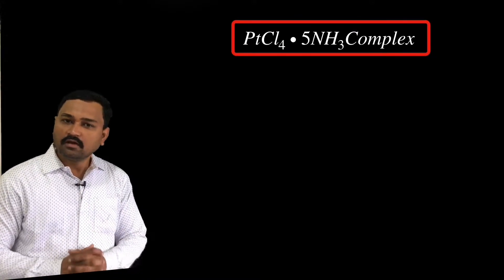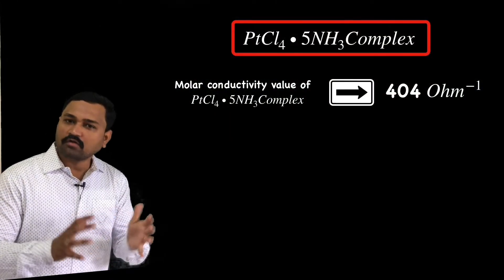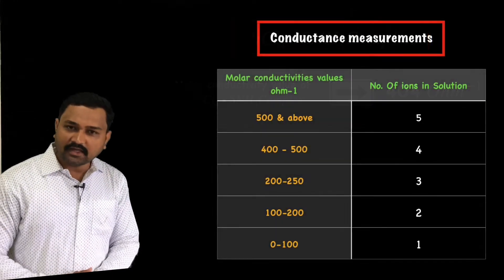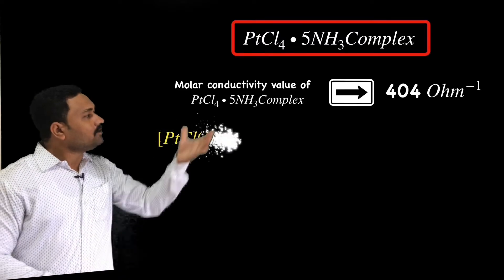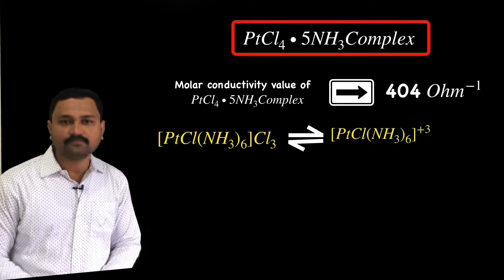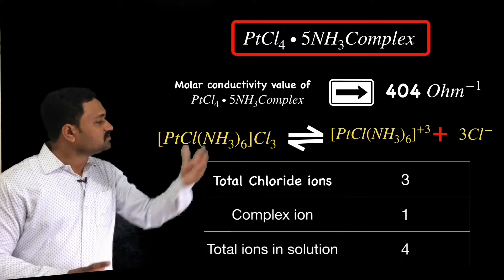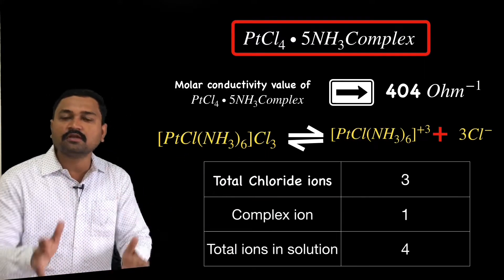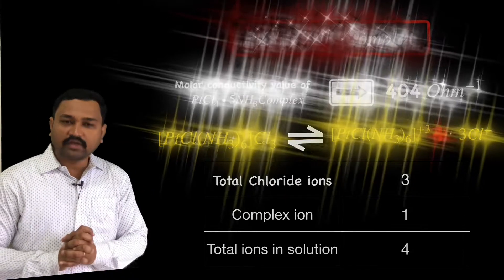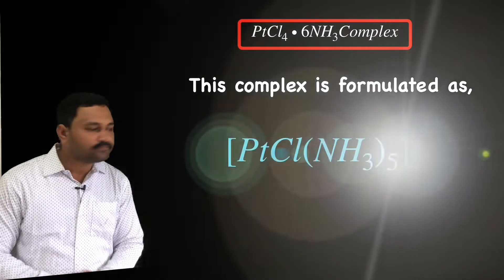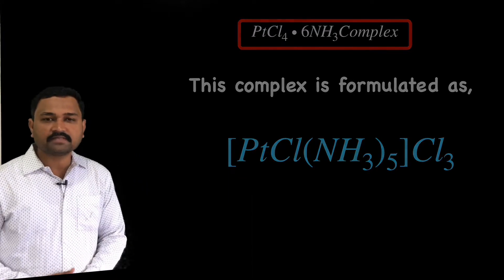For the second complex PtCl₄·5NH₃, the molar conductivity is found to be 404 Ω⁻¹, indicating the presence of four ions in solution. The ionization shows three chloride ions and one complex ion, giving a total of four ions. Hence this complex is formulated as [Pt(NH₃)₅Cl]Cl₃.